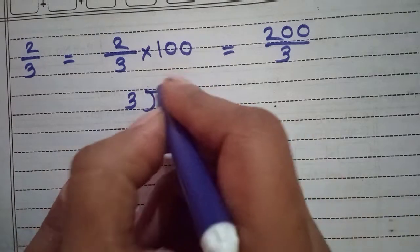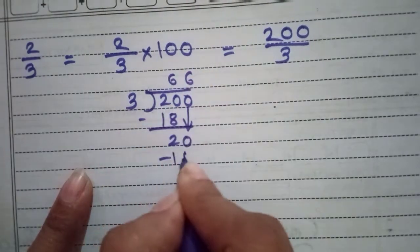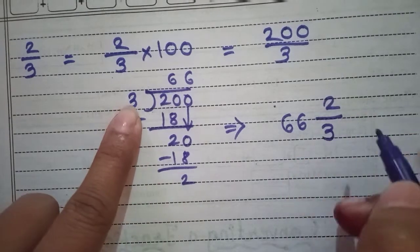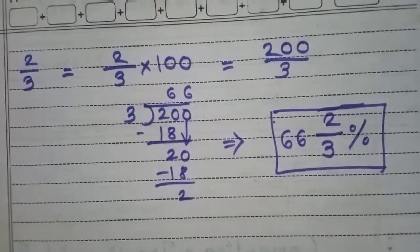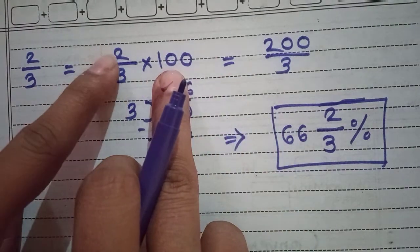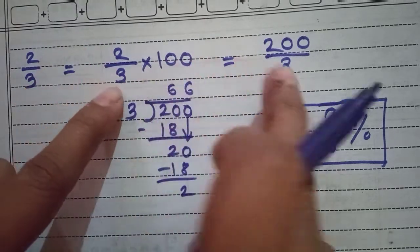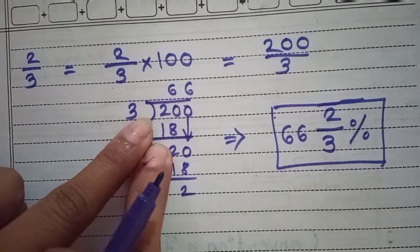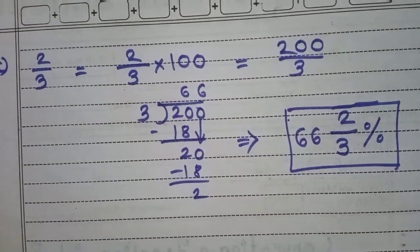Dividing 200 by 3: quotient is 66, remainder is 2, divisor is 3. So the answer is 66 and 2/3 percent. Remember: when nothing can be cancelled, multiply out and write the denominator as is. If the result is an improper fraction, divide to convert it into a mixed fraction, then add the percentage sign.